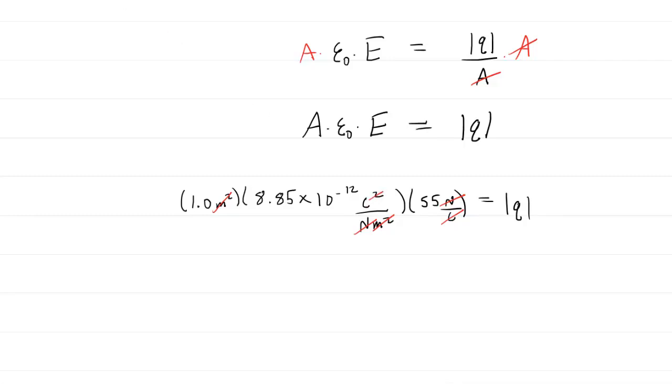When you punch this into your calculator, you will get approximately 4.9 times 10 to the negative 10, and this comes out to be in coulombs. So this would be the magnitude of charge on each plate and the correct answer to the question.